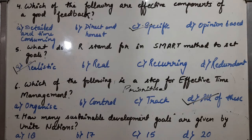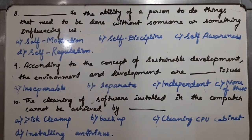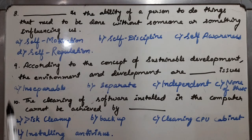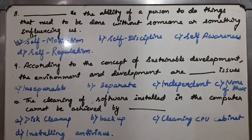Seventh MCQ: How many sustainable development goals are given by the United Nations? The number of goals given by the United Nations are 17 Sustainable Development Goals. Eighth MCQ: Blank is the ability of a person to do things that need to be done without someone or something influencing us. Its answer is self-motivation — the inner drive to do something.